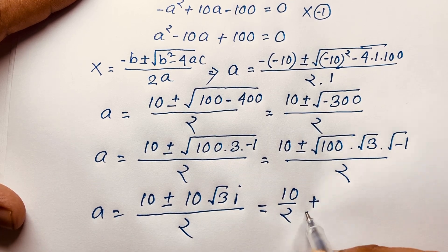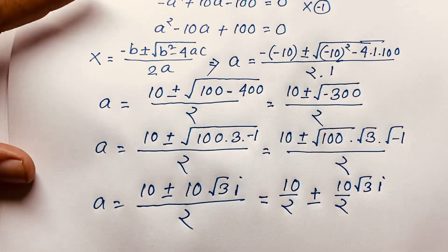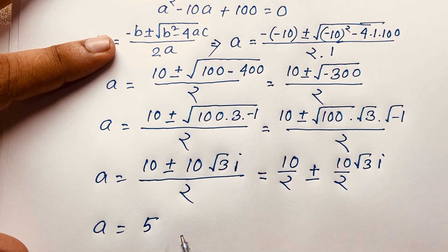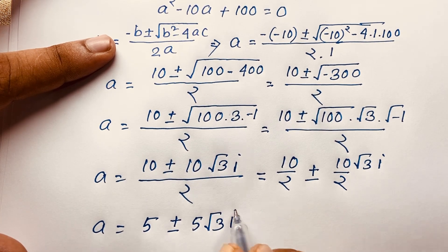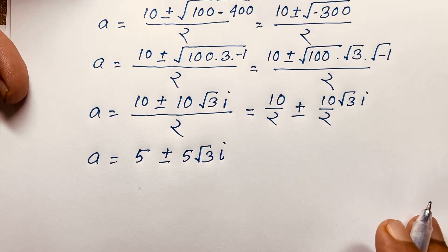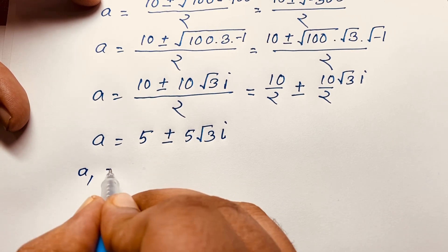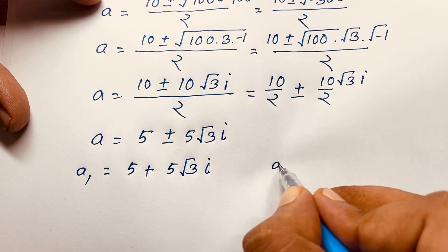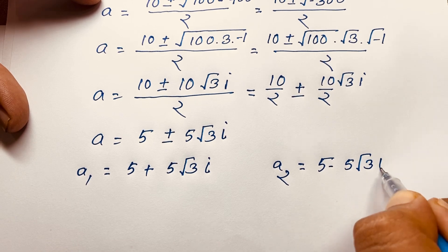Separating the fraction: 10 over 2 plus or minus 10 over 2 times square root 3 times i gives us a equals 5 plus or minus 5 square root 3 i. So a₁ equals 5 plus 5√3 i and a₂ equals 5 minus 5√3 i. There is no real solution — both are complex.